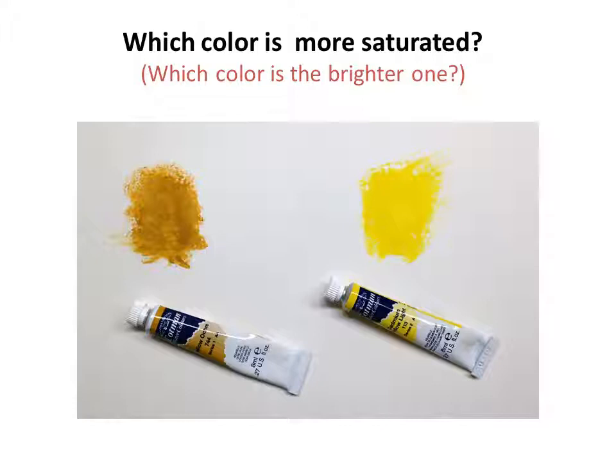So let's try to apply this knowledge to real life. Which color is more saturated — the cadmium yellow on the right or the yellow ochre on the left? Basically, which color is the brighter one? If you said that the cadmium yellow on the right was the brighter, more saturated color, then you're correct. The yellow ochre is still in the yellow family, except it's a desaturated version of that color.